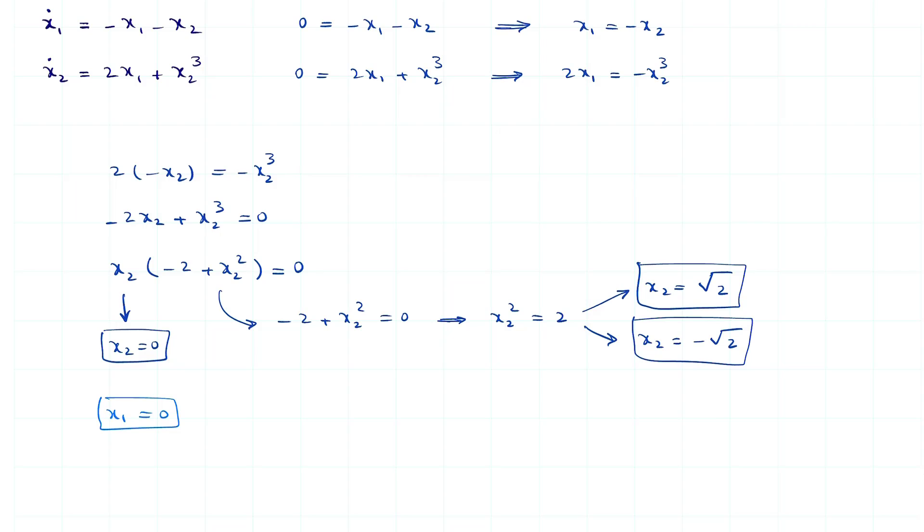When x2 equals square root of 2, x1 is equal to minus x2 which is minus the square root of 2. And for the last case, x1 is equal to the square root of 2.